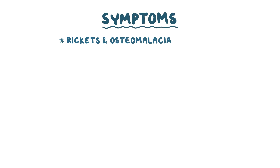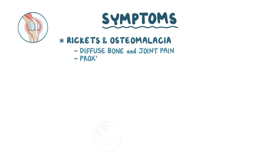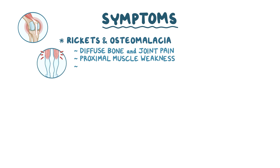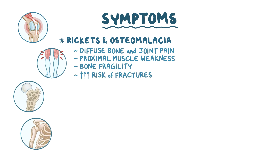With both rickets and osteomalacia, symptoms include diffuse bone and joint pain, proximal muscle weakness, bone fragility, and increased risk of fractures with minimal trauma. Because of low levels of calcium, there may also be muscle spasms and numbness.